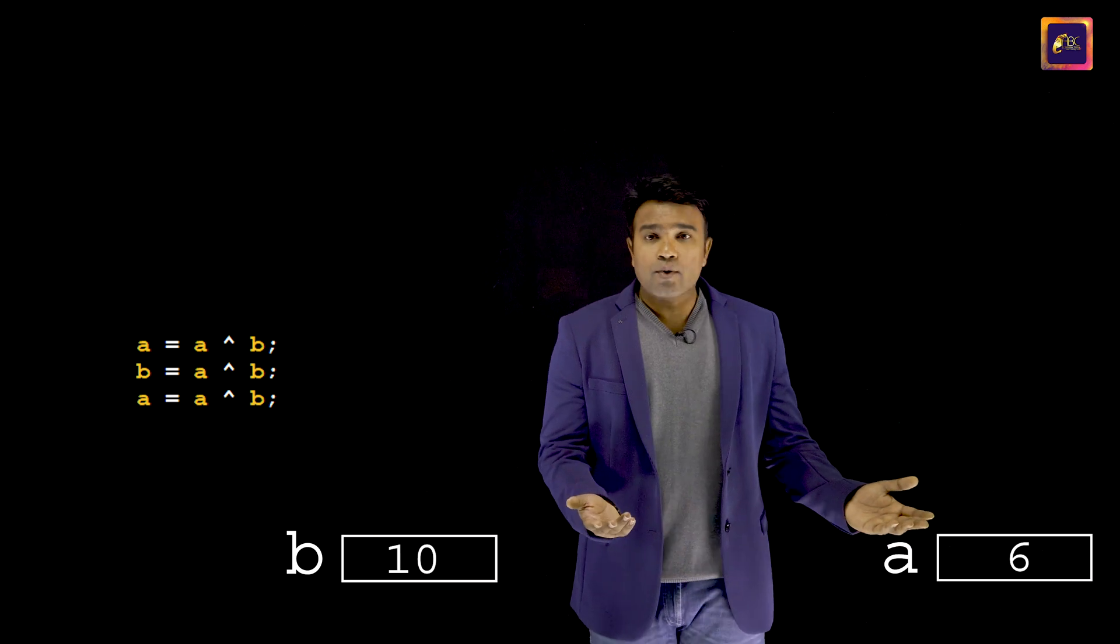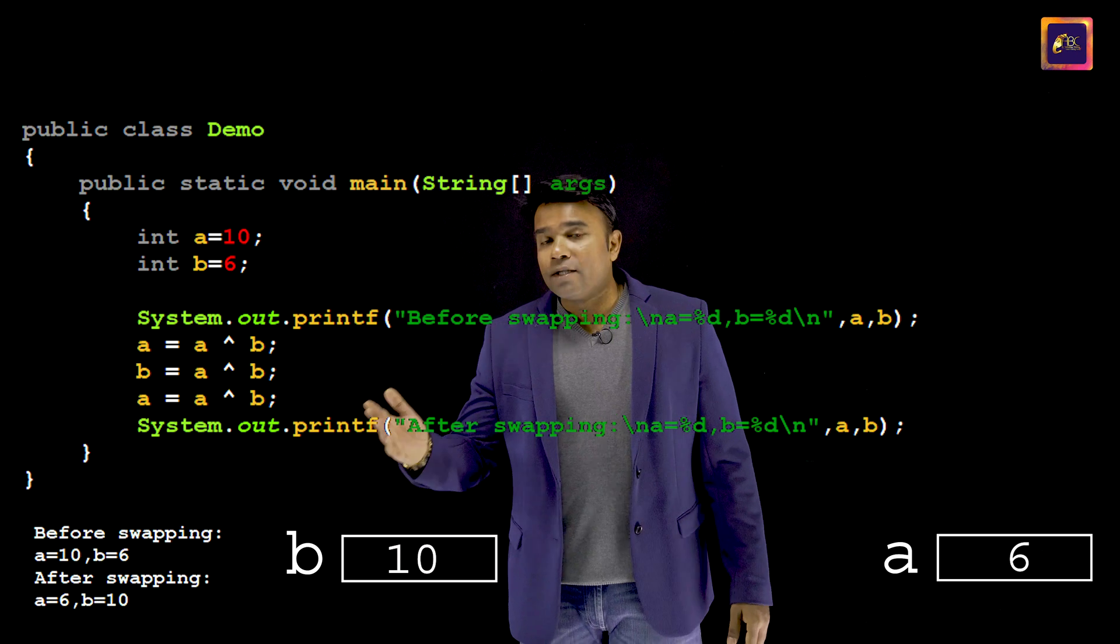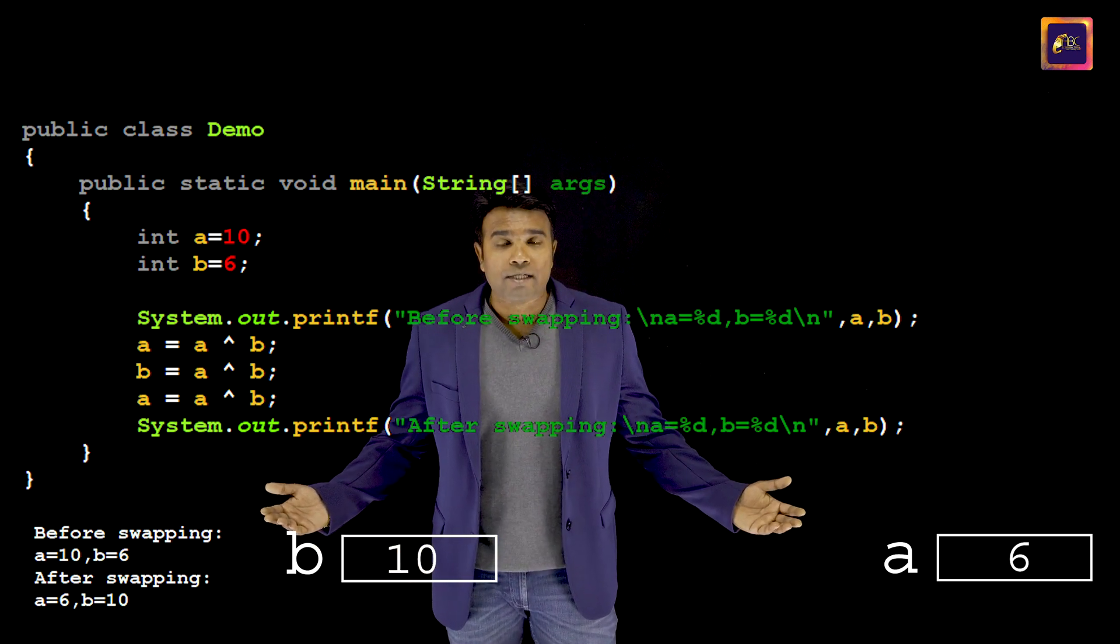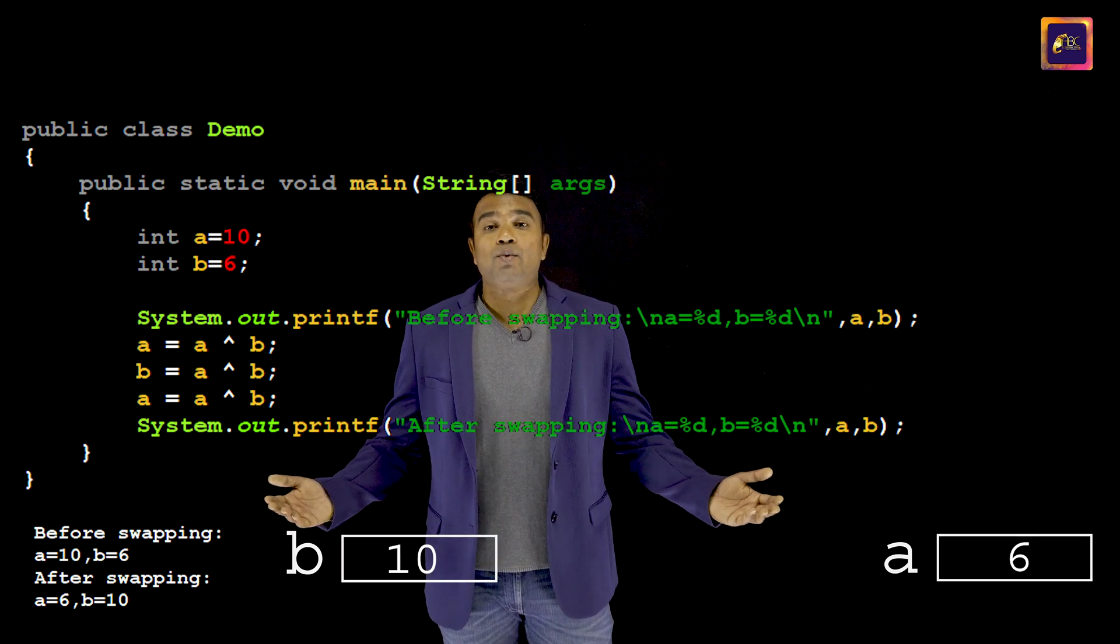And you can see that the numbers are swapped. In fact, this is the complete code. And when I will execute, this is the output. So you have noticed that XORing the inputs thrice can swap the numbers.